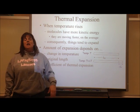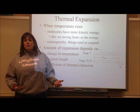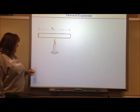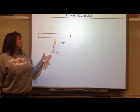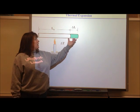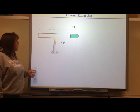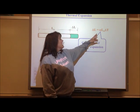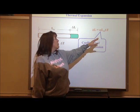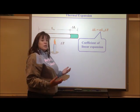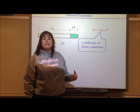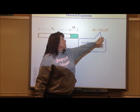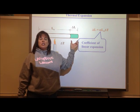Each material has its own coefficient of thermal expansion; they all expand to a different degree. If we look at this mathematically, for linear expansion our equation is that the change in length equals the coefficient of linear expansion — symbolized by alpha — times the original length of the material, times the change in temperature. So all of these things are directly related to the increase in length.